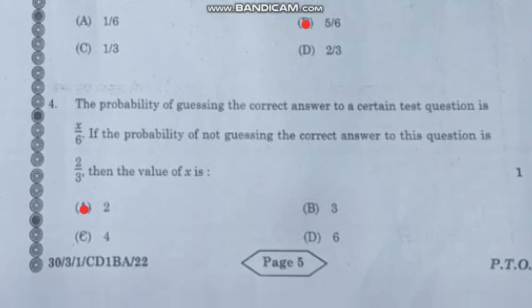Question number 4: The probability of guessing the correct answer to a certain test is x/6. If the probability of not guessing the correct answer to this question is 2/3, then the value of x is—the correct answer is option A, 2.